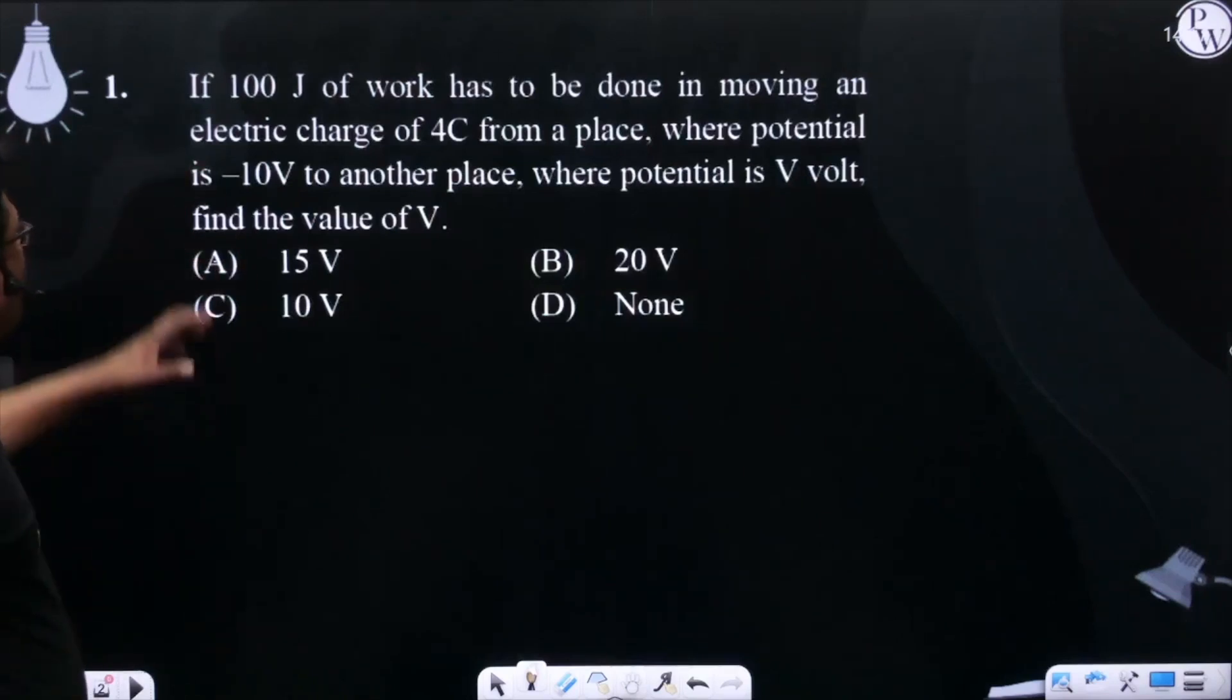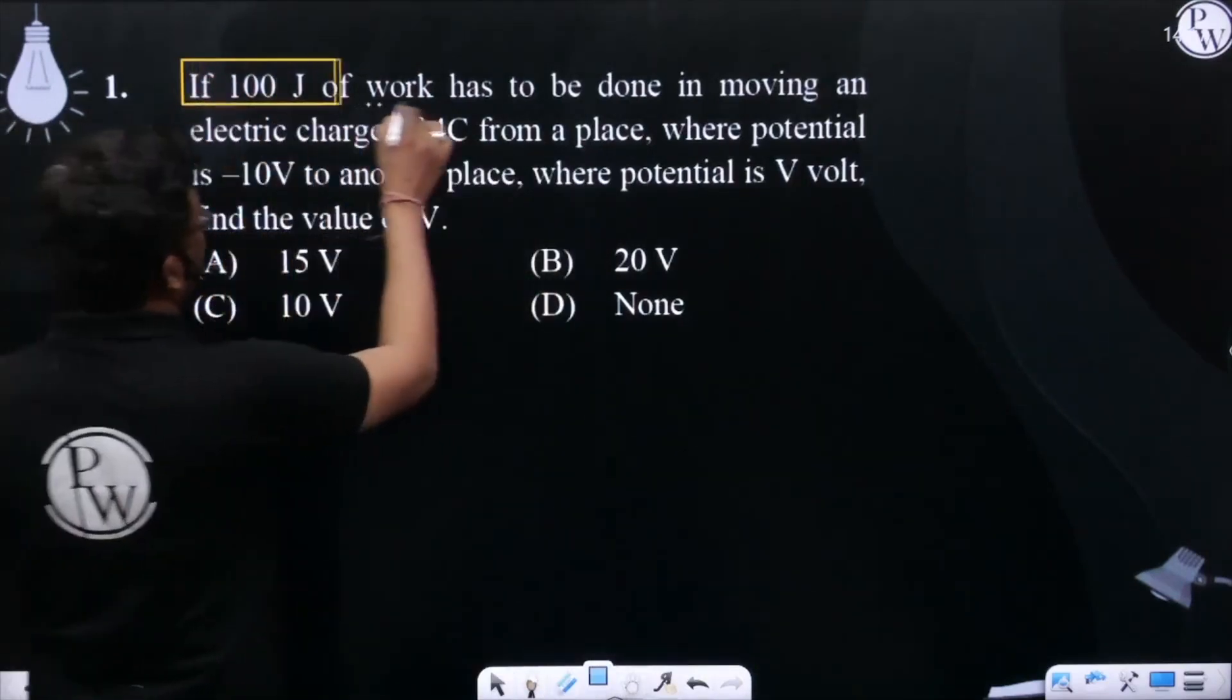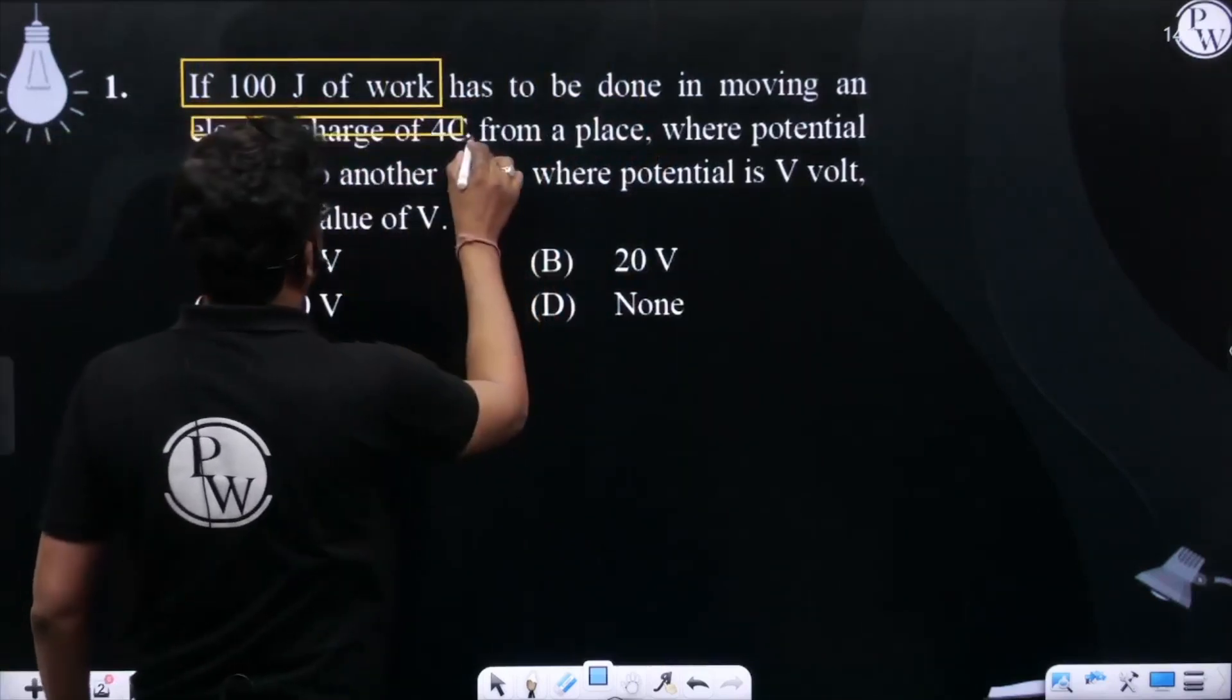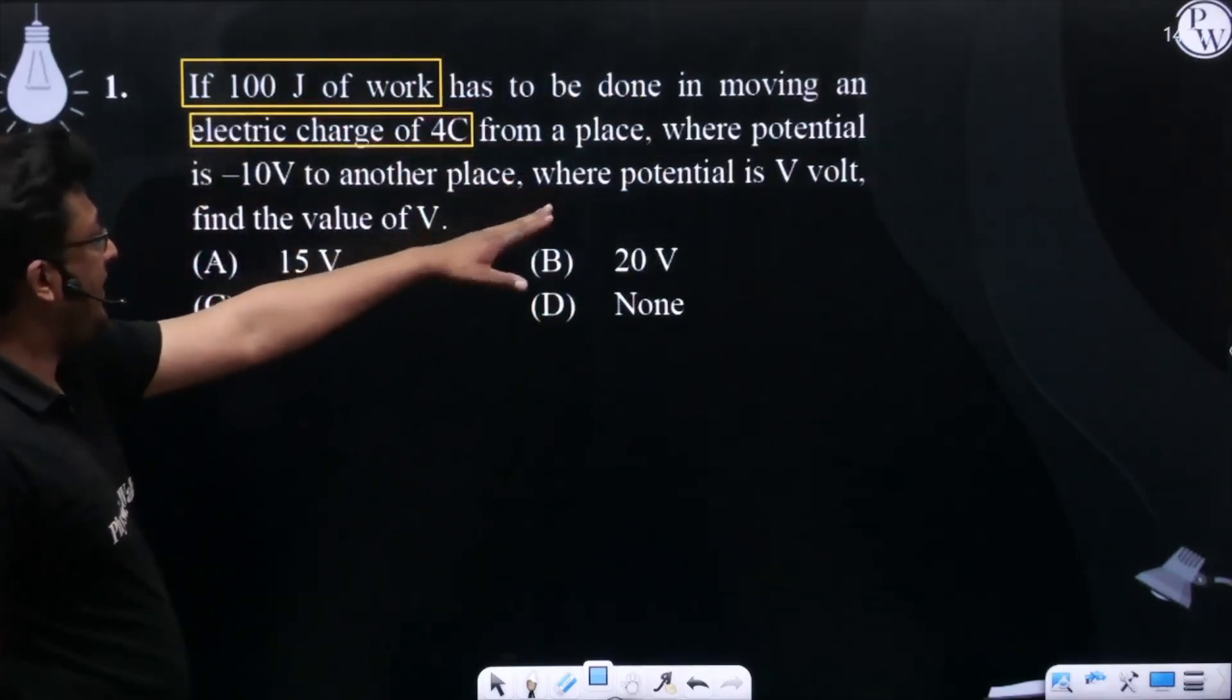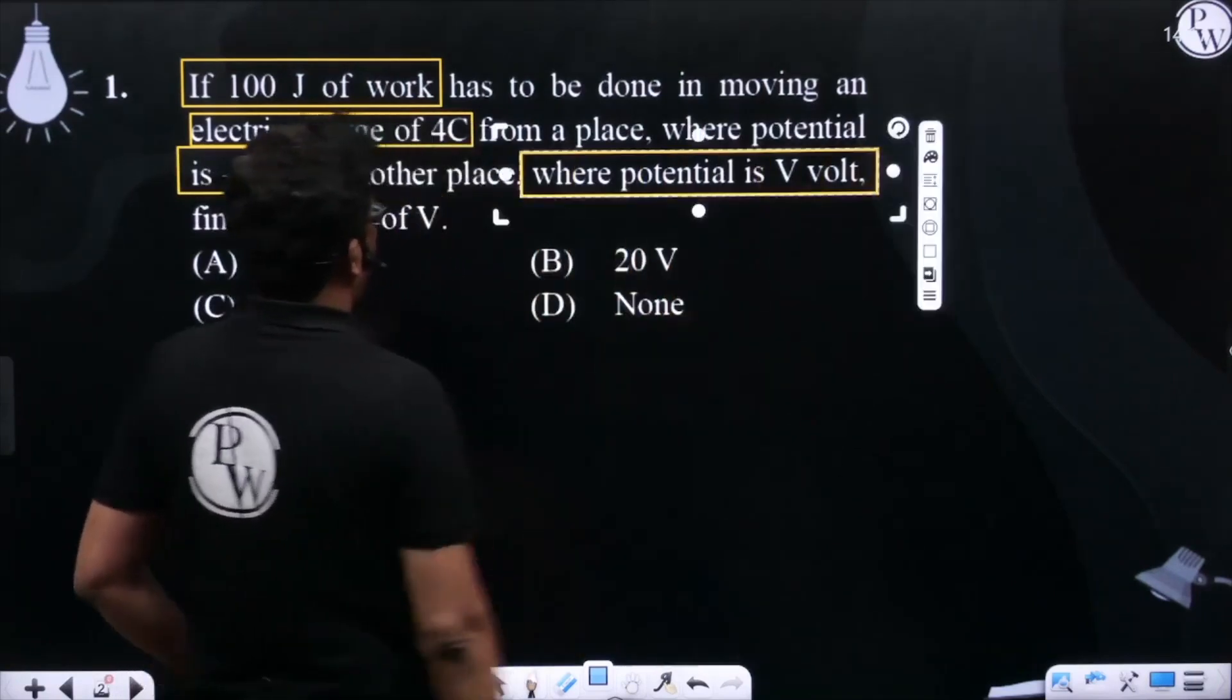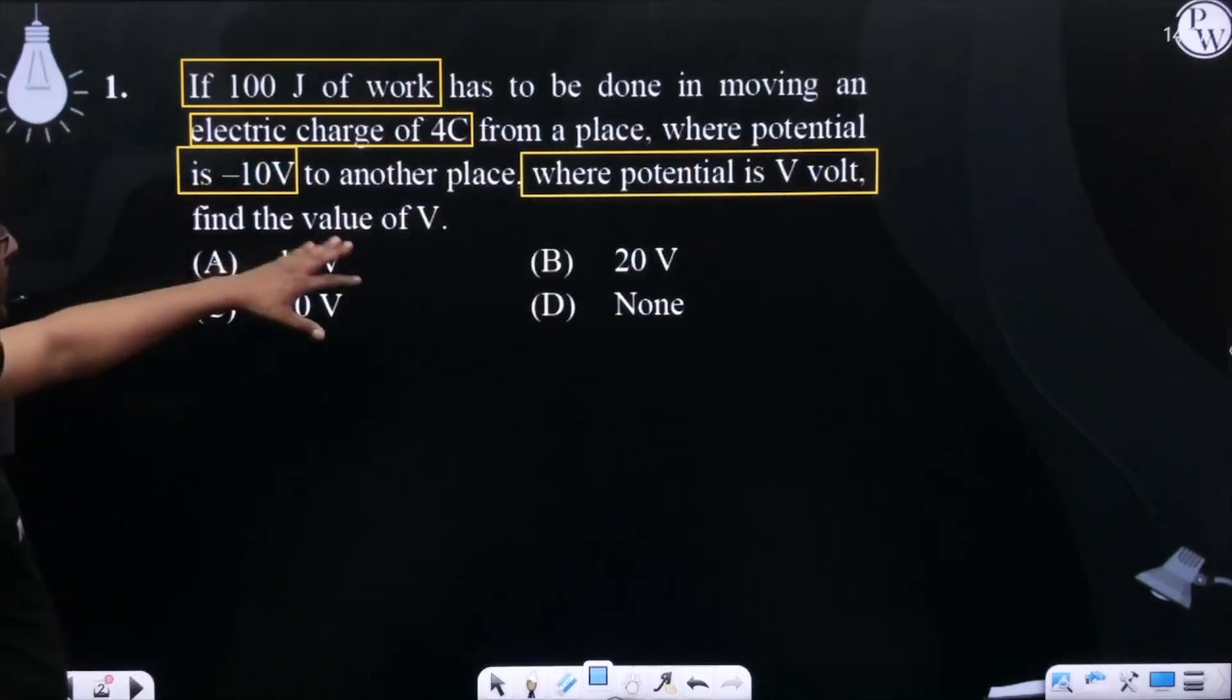Our first question is, if 100 joule of work has to be done in moving electric charge of 4 coulomb from a place where potential is minus 10 volt to another place where potential is V volt, find the value of V.